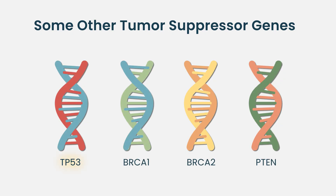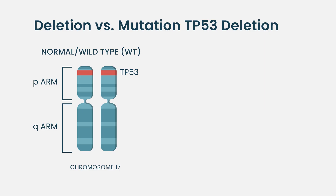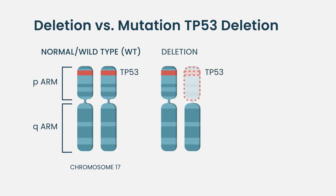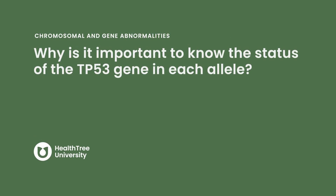One theory for why elephants don't develop as much cancer is because extra copies of P53 protect them. P53 is considered a key gene across different cancers — myeloma, other blood cancers, and even solid cancers. What is the difference between a TP53 deletion and a TP53 mutation? A TP53 deletion removes the gene entirely from one copy of chromosome 17p. In contrast, a TP53 mutation means the gene is present but has a DNA sequence change that alters the protein, causing it to function improperly.